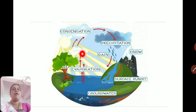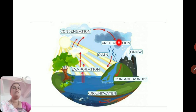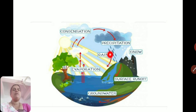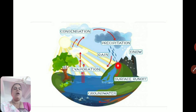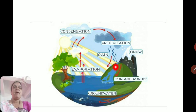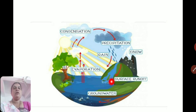Then this steam or evaporated water gets condensed — the condensation process takes place. After condensation, precipitation takes place. After precipitation, water gets converted into water droplets as well as snow. Then this rain and snow come down, and with the help of surface runoff, the rain, snow, or ice particles get collected again in the form of groundwater. This process is called the water cycle.